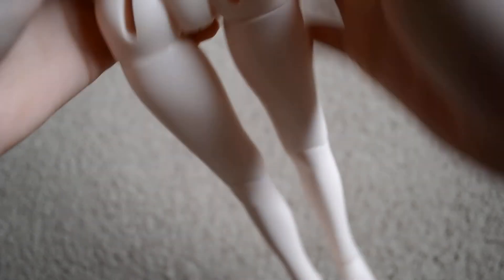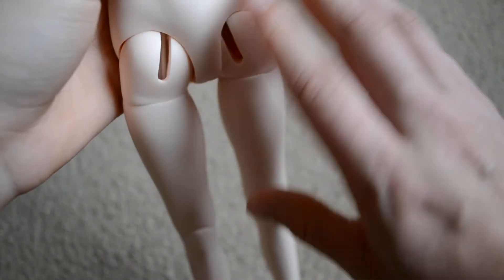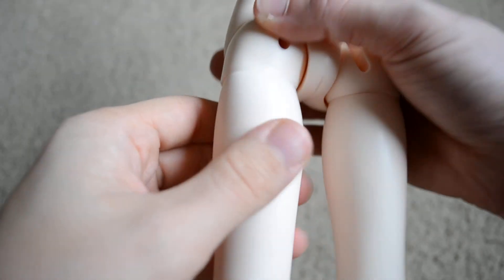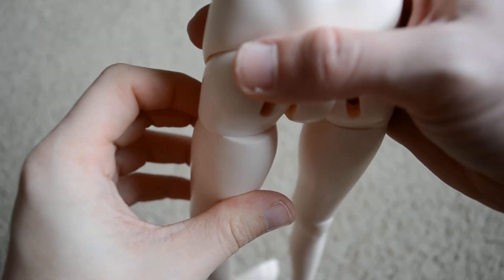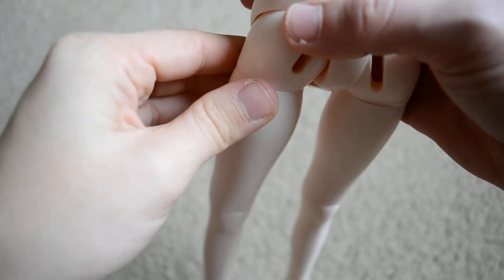She also has femoral joints, which allow her to turn her thighs wherever you want, so she really has a lot of mobility here. The only thing with that is that since it's not perfectly round here, when you turn it, it doesn't really line up, so it looks a little strange, but it's nice to be able to do that.